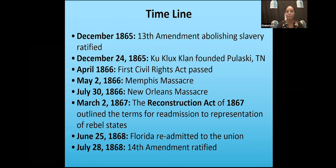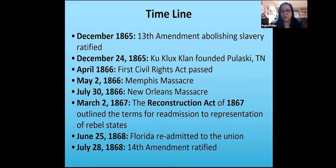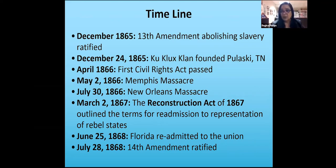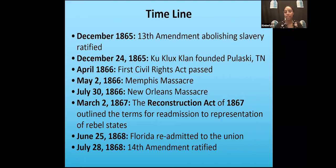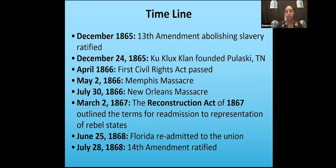Congress was concerned the Civil Rights Act might be seen as unconstitutional, which is why they tried to codify these protections in the 14th Amendment. In the spring and summer of 1866, there were massacres in Memphis and New Orleans — racialized violence against Black citizens — which also spurred northerners to believe Black southerners needed stronger federal protection, further motivating the 14th Amendment.